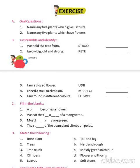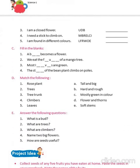Fill in the blanks: A bud becomes a flower. We eat the fruit of a mango tree. Most leaves are green. The stem of the bean plant climbs on poles. Match the following: rose plants have flowers and thorns; trees are tall and big; tree trunks are hard and rough; climbers have soft stems; leaves are mostly green in color.